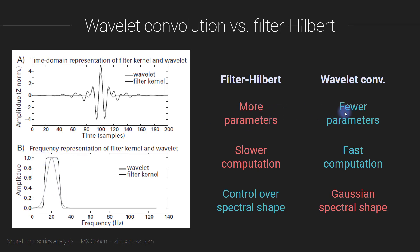Wavelets on the other hand have only two parameters. One is the frequency of the sine wave that determines the peak frequency of the wavelet. The key parameter for wavelets is the width of the Gaussian, which you can define either as the number of cycles or as the full width at half maximum. So there are fewer parameters.